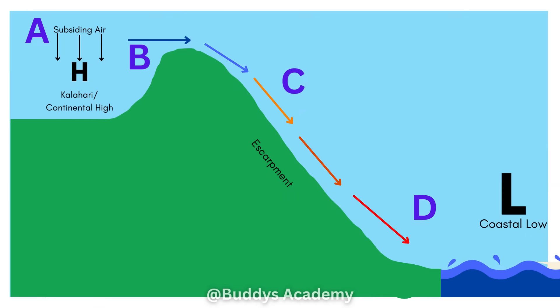Let's look at this diagram for a visual representation of the entire process. At A, you can see that the air will subside at the Kalahari High, located over the interior of South Africa. At B, the air is going to compress and then move towards the coast. At C, the air moves down the escarpment — you can see how the colors of the arrows change from dark blue to red, indicating the change in temperature from a cool wind to a warm wind. At D, the wind has reached the coastal low and can reach temperatures of 30 degrees Celsius or more.